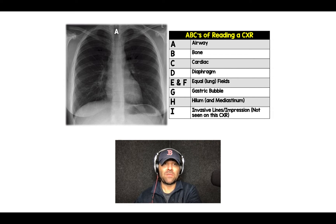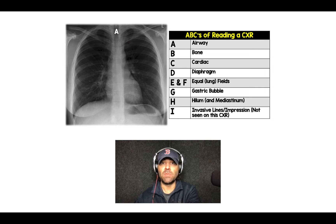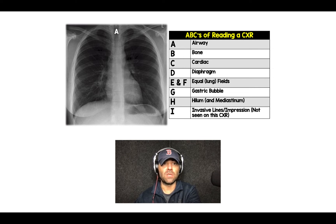A stands for airway. When you're looking at your chest x-ray, you want to look at your trachea and the two main bronchi that come off of that. You want to make sure it's midline, not pushed over to one side or pulled over to another side.